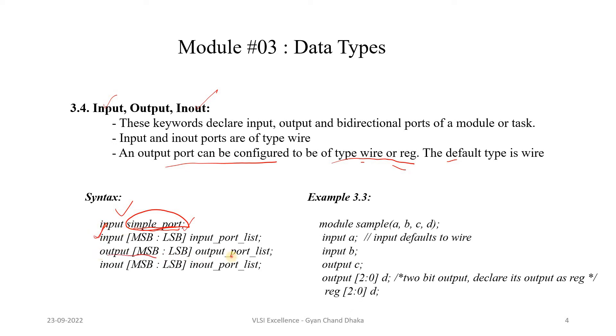This is an output, its data type can be wire as well as reg. And the input inout port, this is also going to be wire type.